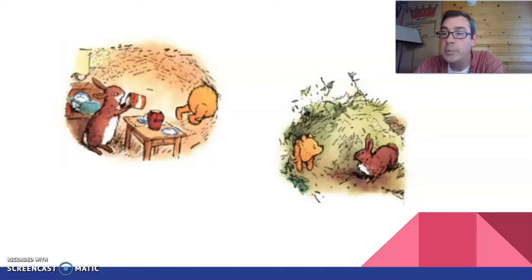Now, by this time, Rabbit wanted to go for a walk, too, and finding the front door full, he went out by the back door and came round to Pooh and looked at him. Hello, are you stuck? he asked. No, said Pooh carelessly, just resting and thinking and humming to myself. Here, give us a paw. Pooh bear stretched out a paw, and Rabbit pulled and pulled and pulled. Ow, cried Pooh, you're hurting.